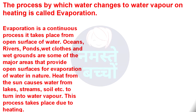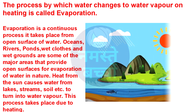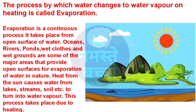The process by which water changes to water vapour on heating is called evaporation. Evaporation is a continuous process. It takes place from the open surface of water.